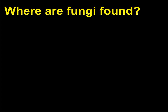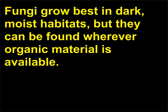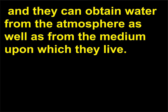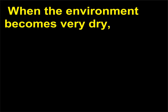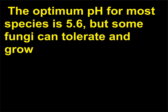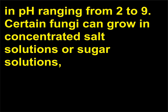Where are fungi found? Fungi grow best in dark, moist habitats, but they can be found wherever organic material is available. Moisture is necessary for their growth, and they can obtain water from the atmosphere as well as from the medium upon which they live. When the environment becomes very dry, fungi survive by going into a resting stage or by producing spores that are resistant to drying. The optimum pH for most species is 5.6, but some fungi can tolerate and grow in pH ranging from 2 to 9.